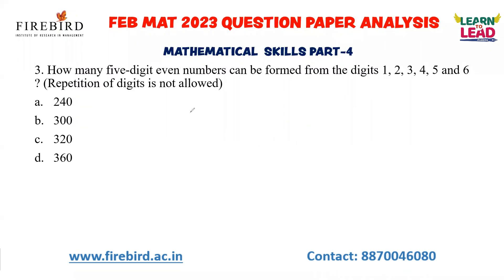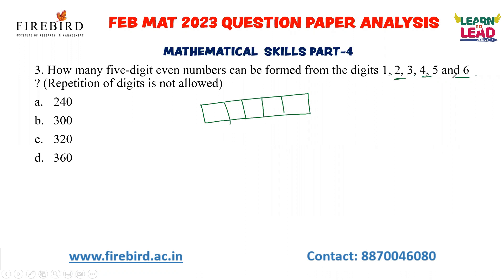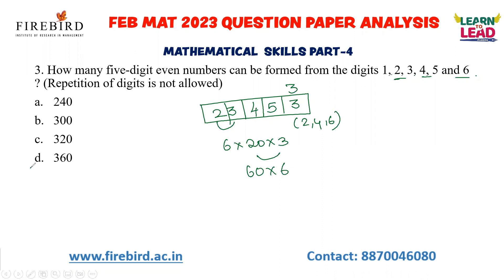Next question: how many 5-digit even numbers can be formed from the digits 1, 2, 3, 4, 5, and 6? Consider a 5-digit number with positions: ten-thousands, thousands, hundreds, tens, and units. There are 6 digits available, of which 3 are even (2, 4, 6). For the units digit, I can select any one of the 3 even numbers. Since repetition is not allowed, the remaining positions can be filled with 5, 4, 3, and 2 choices respectively. So: 5 × 4 × 3 × 2 × 3 = 360 is your answer.